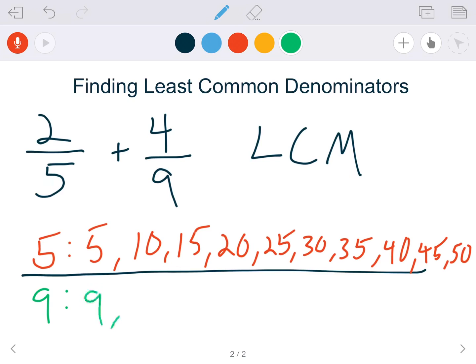So we have 9, 18, 27, 36, 45, and then I can actually stop right there because 5 has a multiple of 45.